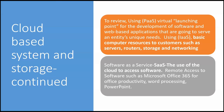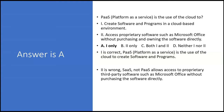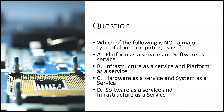Now on the exam, look for a question like this: Platform as a Service is the use of the cloud to do what? Option one: create software and programs in a cloud-based environment — yes, because PaaS is about using the cloud to create software, so option one looks good. Option two: access proprietary software such as Microsoft Office without purchasing and owning the software directly — nope, that's SaaS not PaaS. That would allow access to proprietary third-party software such as Microsoft Office. So PaaS — option one only.